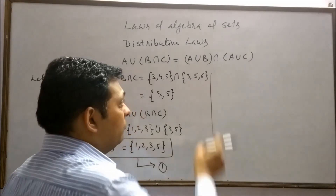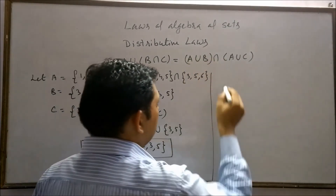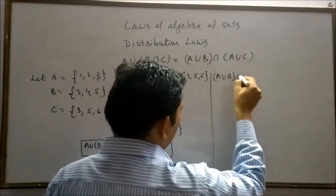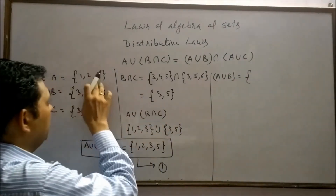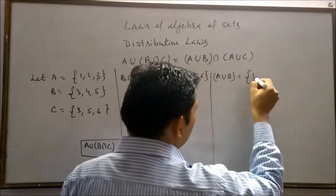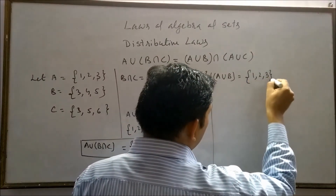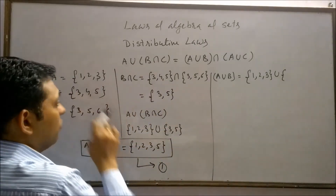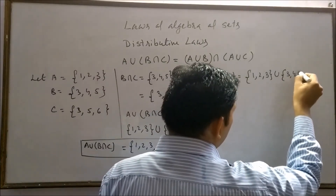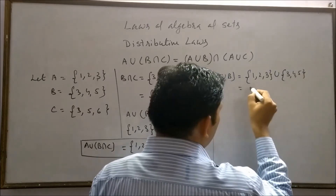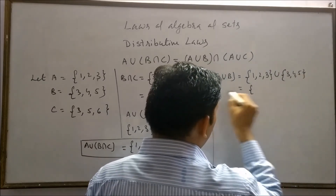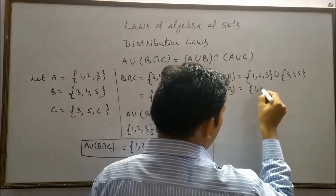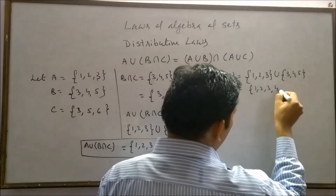Now we will find the second result. A union B means A = {1, 2, 3} and B = {3, 4, 5}. Therefore, A union B = {1, 2, 3, 4, 5}.